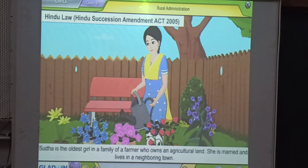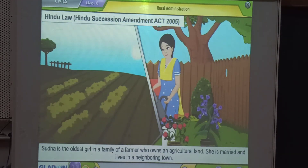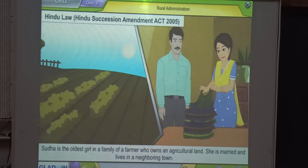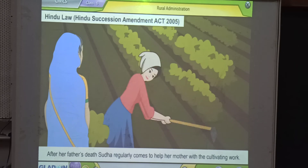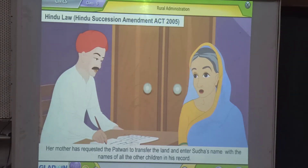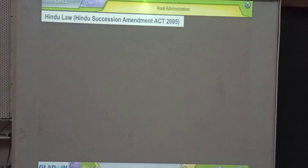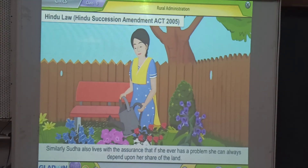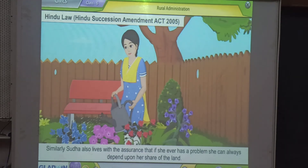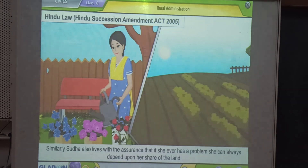For example, Sudha is the oldest girl in a family of a farmer who owns agricultural land. She is married and lives in a neighboring town. After her father's death, Sudha regularly comes to help her mother with the cultivating work. Her mother has requested the patwari to transfer the land and enter Sudha's name along with the names of all other children in his record. Sudha's mother happily works on the farm with the help of the younger brother and sister. Similarly, Sudha lives with the assurance that if she ever has a problem, she can always depend upon her share of the land.